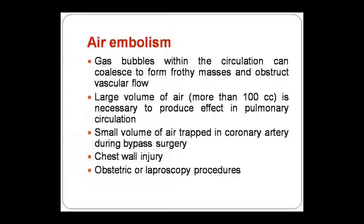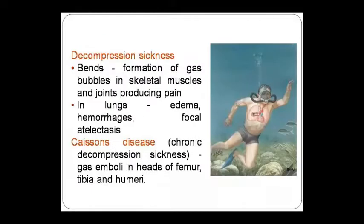Air embolism can affect pulmonary circulation, or it can cause decompression sickness, also called 'bends and chokes' disease. If gas bands form in the joints it produces pain; in the lungs it causes edema, hemorrhage, focal atelectasis. Chronic decompression sickness causes emboli in the femur head, tibia, or humerus. Acute decompression sickness is called bends and chokes disease, with pain and respiratory difficulties. Caisson disease is an example of chronic decompression sickness.